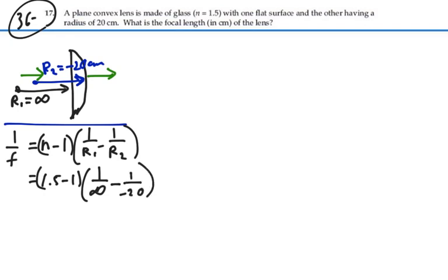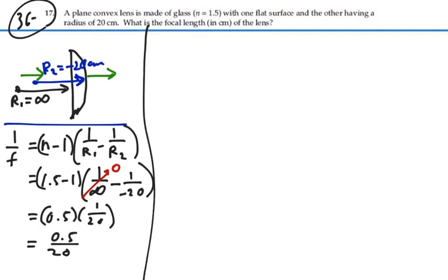For the 1 over infinity, we'll get 0. We'll have a negative, negative 1 over 20. So this is going to equal 0.5 times a positive 1 twentieth. So this is 0.5 over 20. So the focal length will equal 20 divided by 0.5 or 40 centimeters.